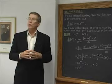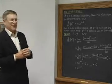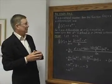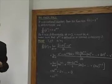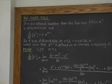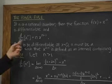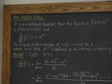We now prove the power rule. The theorem goes like this: Let n be a rational number. Then the function f(x) = x^n is differentiable, and its derivative is given by nx^(n-1).